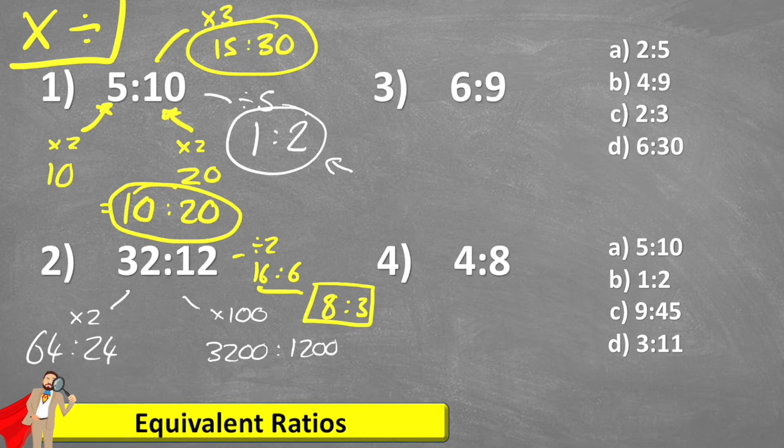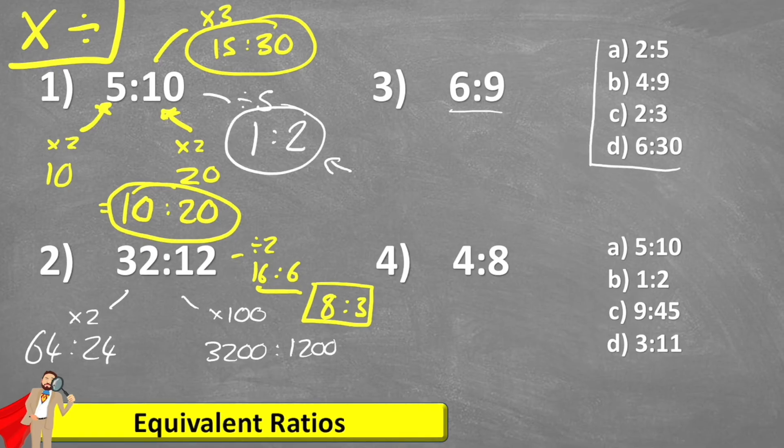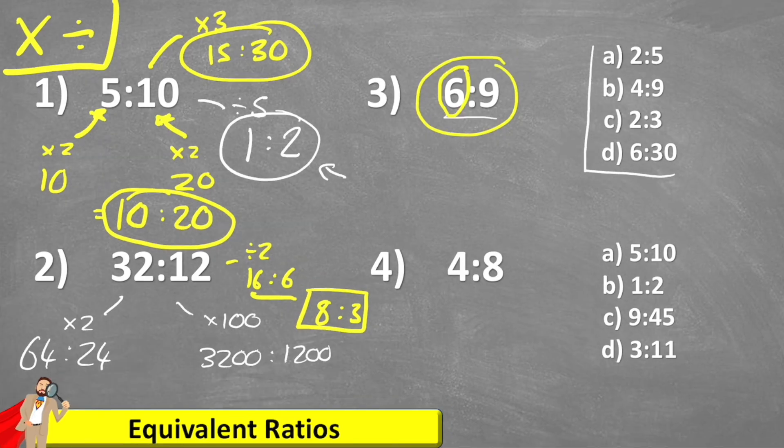Question three, let's try and find equivalent fractions in our lists. So which of these ratios on the right is an equivalent ratio of six to nine? Well, let's look at A first of all, we can see that to get from six down to two, I'd have to divide by three. But if I divide my nine by three, I'm not going to get five. So A is not an equivalent ratio.